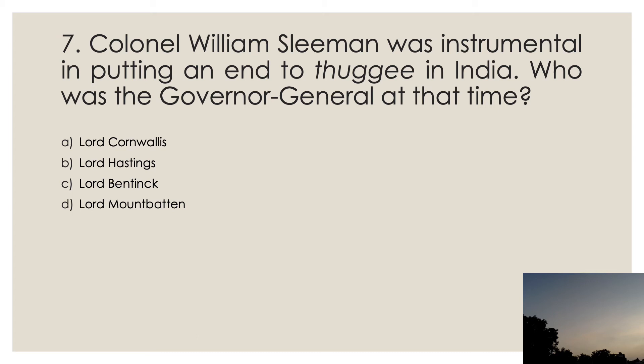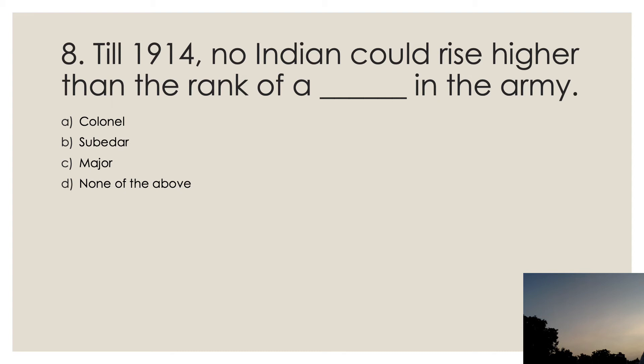Question seven: we have read some interesting things about Thuggee and Colonel Sleeman — and Sleemanabad. Colonel William Sleeman was instrumental in putting an end to Thuggee in India. Who was the Governor General at that time? The options are Lord Cornwallis, Lord Hastings, Lord Bentinck, and Lord Mountbatten. The correct answer is C — Lord Bentinck.